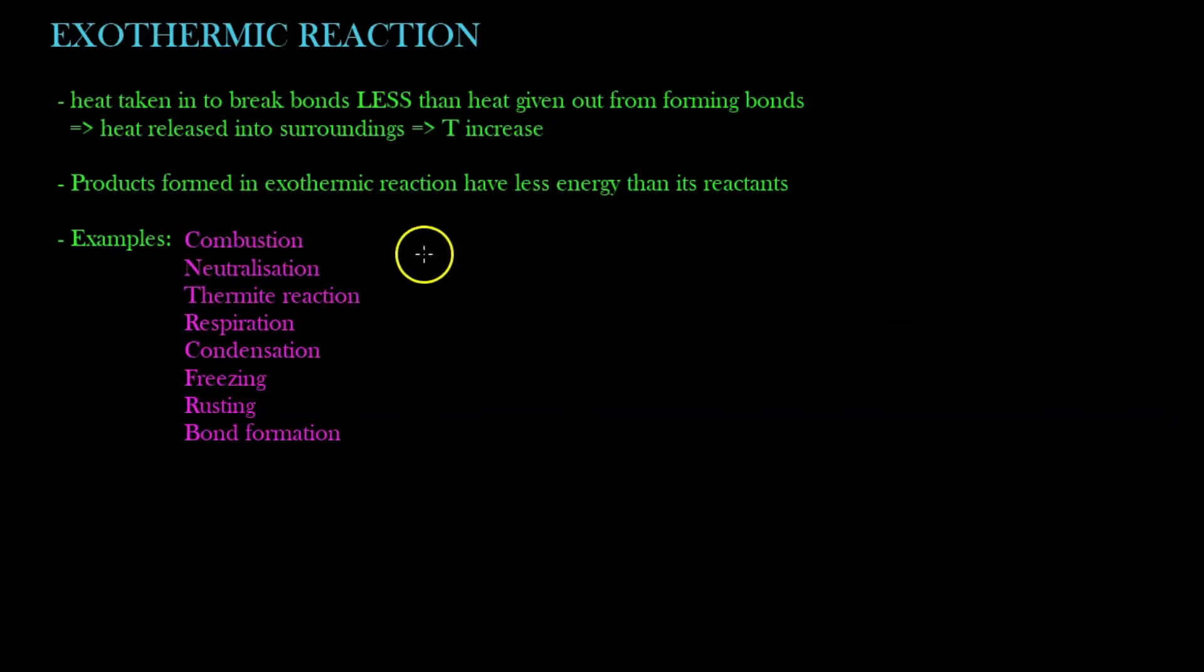So if you recall, in a chemical reaction, we are using A and B again, because it's the easiest. So we have A₂ and B₂ to give us AB molecules.